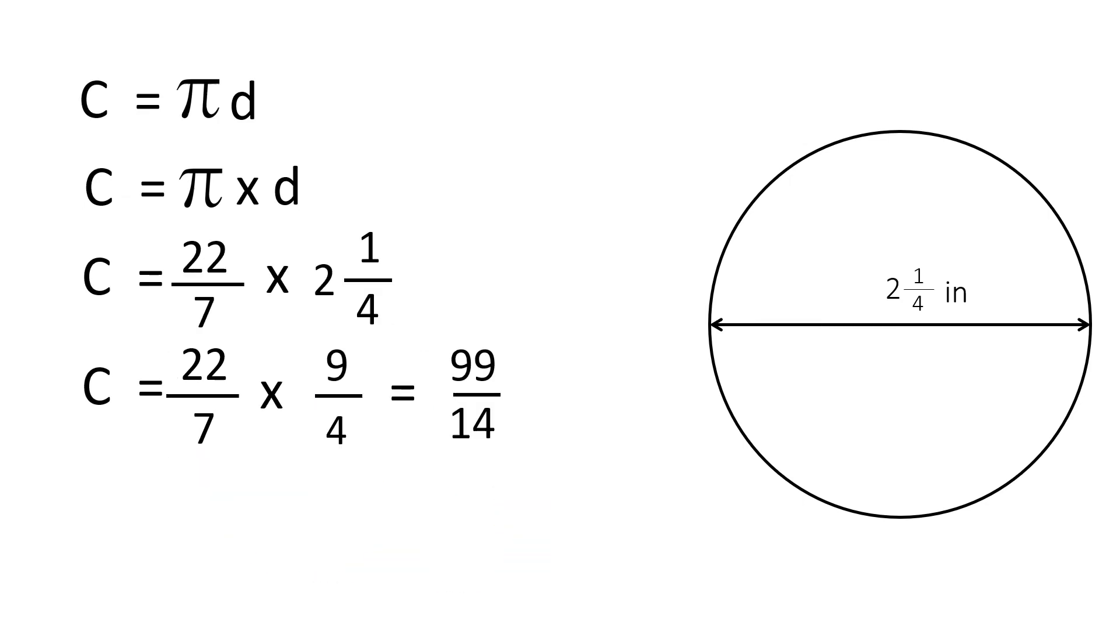We cannot leave 99 over 14 because that's improper. So, 14s, the denominator stays the same. We'll write it right here. And we ask ourselves, how many times does 14 go into 99? The answer is 7, which we'll write right up here. 14 times 7 will be 98. Minus 99 will be 1. So, 7 and 1 fourteenth inches is the answer.